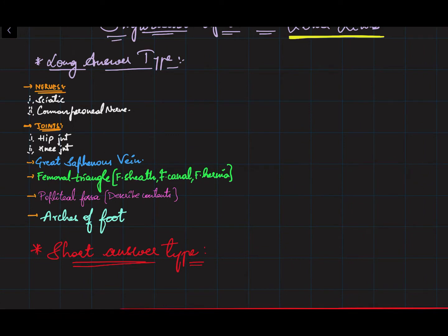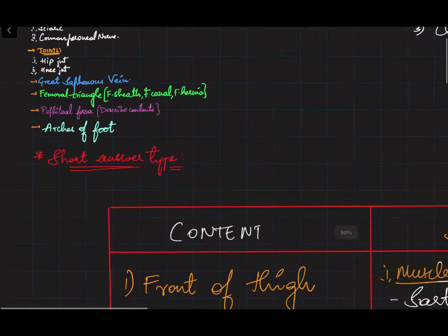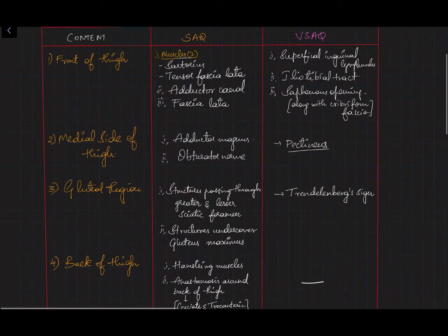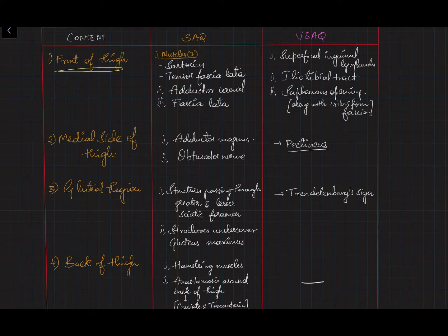I have given it in the form of long answer type questions where I have given a few questions. After that, in short answer type questions, I made a table here where I gave the content—that means front of thigh is the chapter name—and the SAQs and VSAQs that you may expect from that chapter.